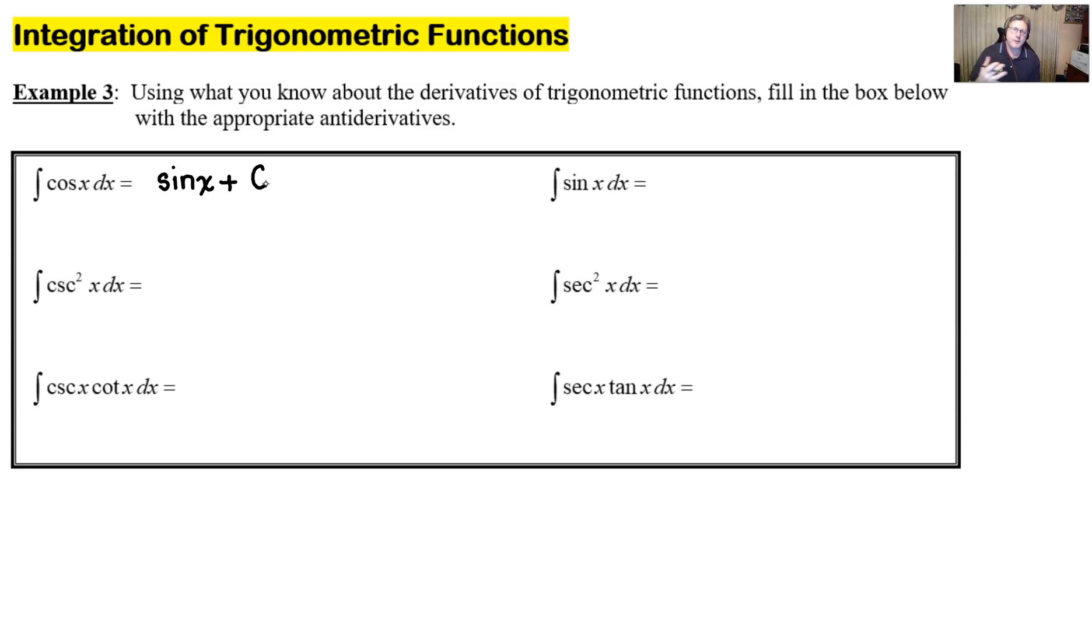If I look over at the right side, the integration of sine of x, what would we take the derivative of that would produce sine? Well, you might recall that the derivative of cosine was something. This produced negative sine of x. But what if I just want to integrate sine of x? I don't want the negative there. Well, the negative would just float to the other side. The integration of sine of x is negative cosine of x plus c. And I know it's a little tricky.